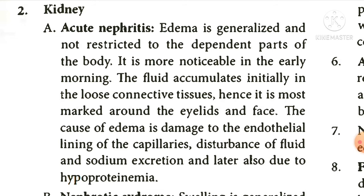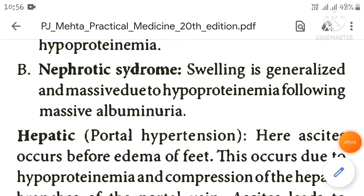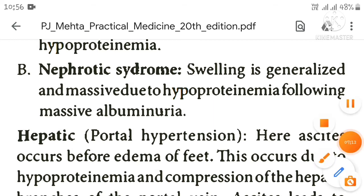In nephrotic syndrome, swelling is generalized and massive due to hypoproteinemia following massive albuminuria.